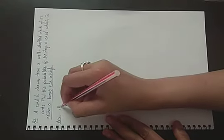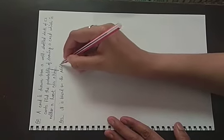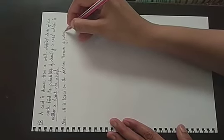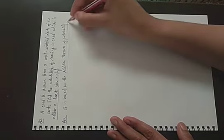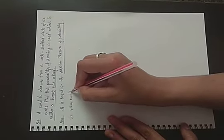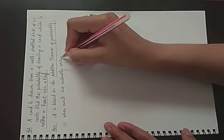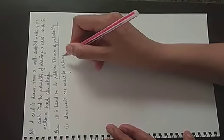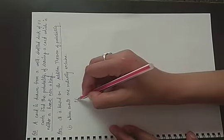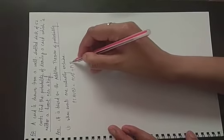It is based on the addition theorem of probability. In previous video lecture, we have discussed addition theorem. There are two types. First, when events are mutually exclusive, mutually exclusive event meaning when one event does not depend on the other. And probability of two events, P(A union B) is equal to P of A plus P of B.